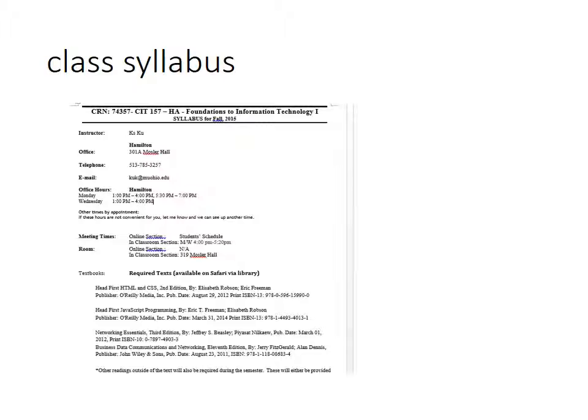Here you can see the required textbooks for the semester. They are free on the Safari by the Miami Online Library. I will talk more about this soon. On the next page of the syllabus, you will see class objectives. The overall goal of the course is to develop a broad perspective of basic aspects of information technology and computing.